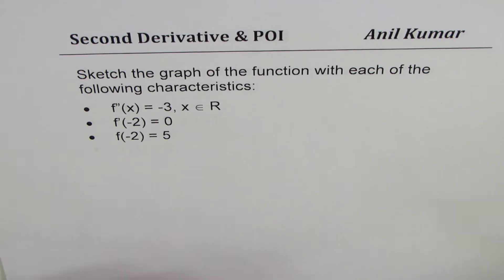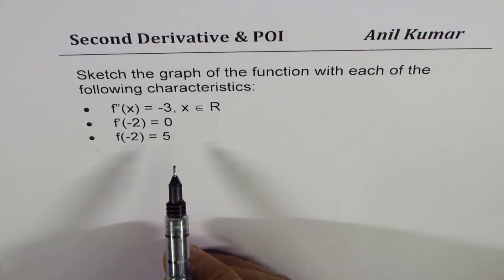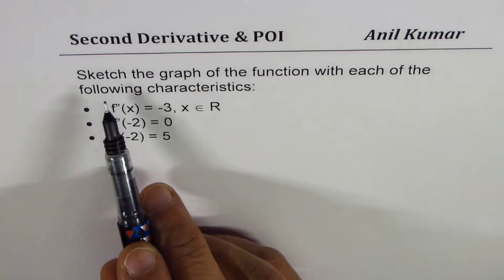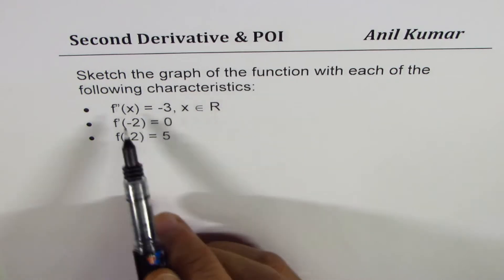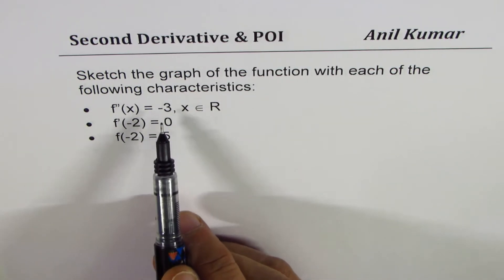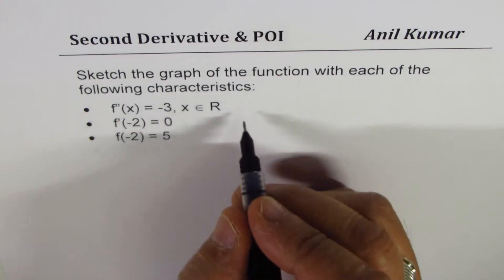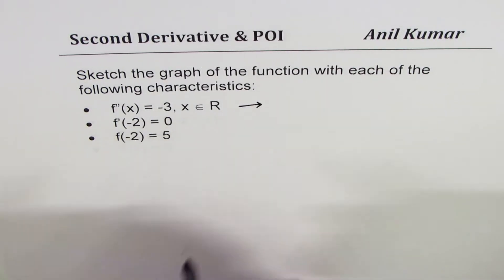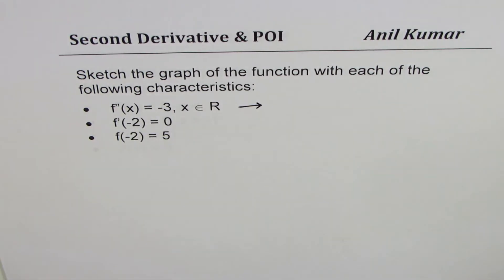You can pause the video, copy this question, and sketch the graph of this function. The question says: sketch the graph of the function with each of the following characteristics. The second derivative is negative for all real numbers — what does that mean? Second derivative negative for all real numbers means the function is concave down.